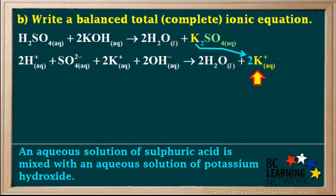The K2SO4 is aqueous, so we must dissociate that. We get two K plus ions and one SO4 2 minus or sulfate ion.